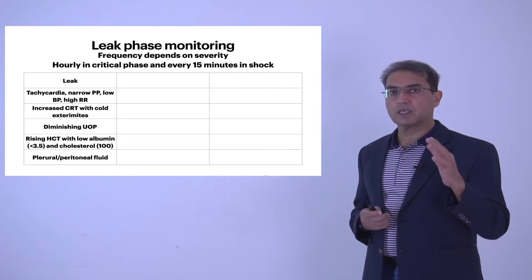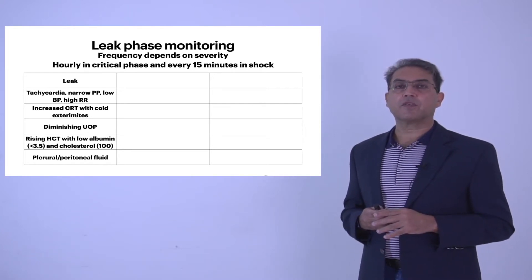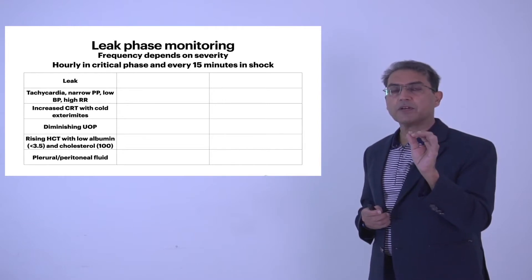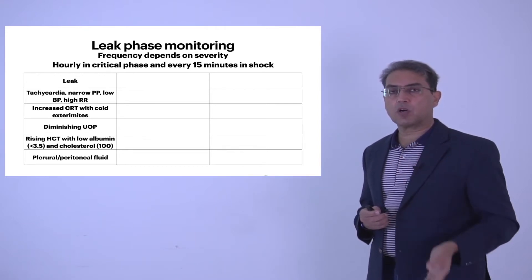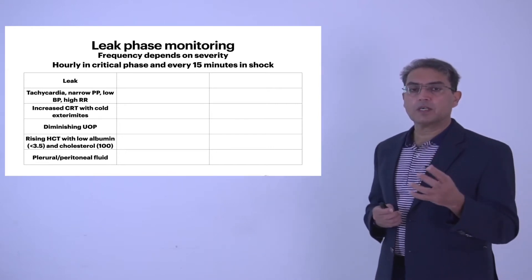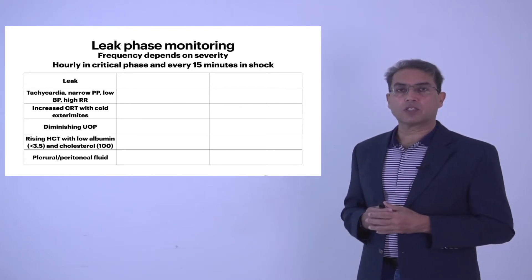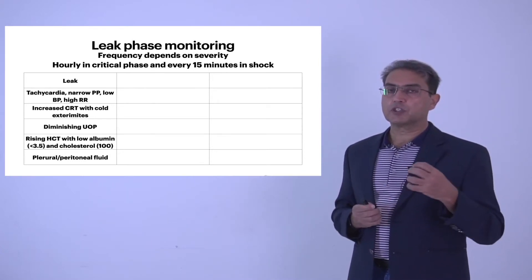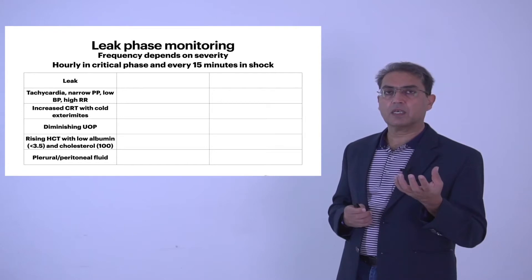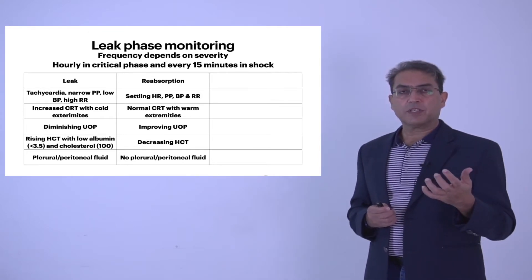The patient has tachycardia, hypotension, low pulse pressure, and increased capillary refill time. Capillary refill can be checked in the finger pulps, toe pulps, or toenails — it is prolonged. The extremities are cold, there is diminished urine output, and the hematocrit starts rising. The patient may have low albumin or low cholesterol as these leak from circulation, and fluid accumulates in the pleura or peritoneum. During convalescence, this fluid starts reabsorbing in the late critical phase, perfusion starts improving, blood pressure settles, heart rate settles, and pulse pressure becomes normal.